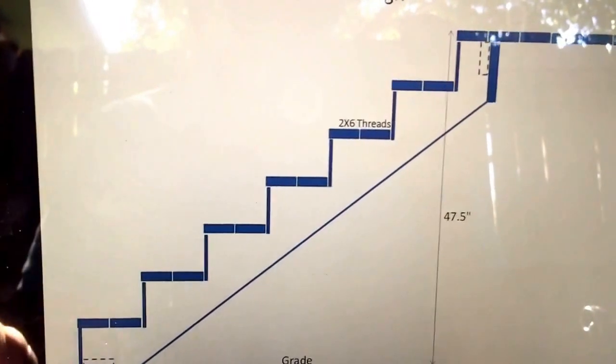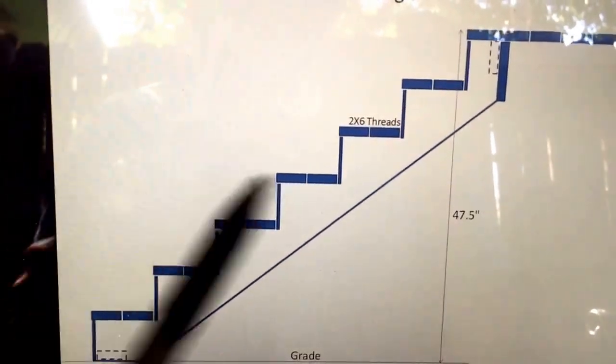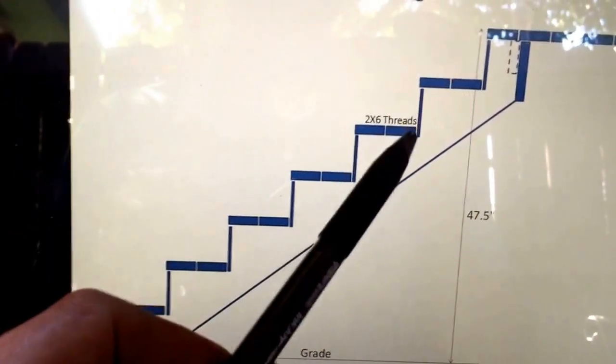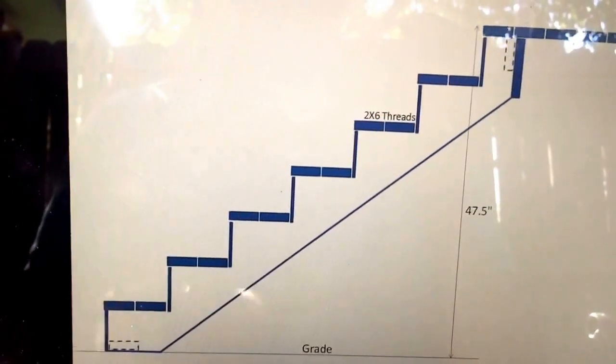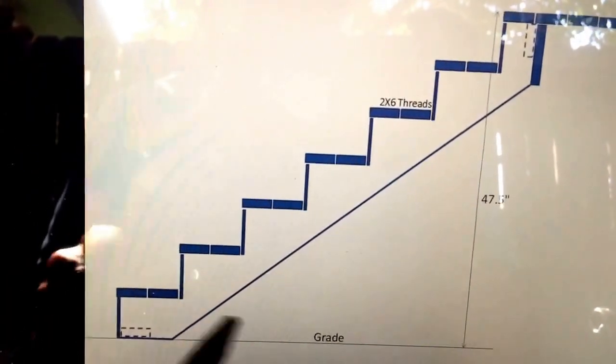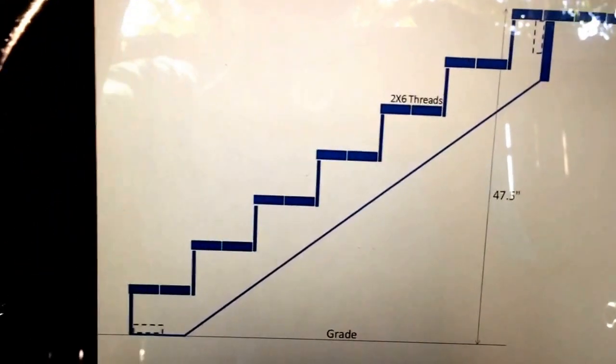Anytime you're doing a set of steps, you need to determine your rise and your run in order to cover this height that we have here and create a certain distance. So how do you go about that?